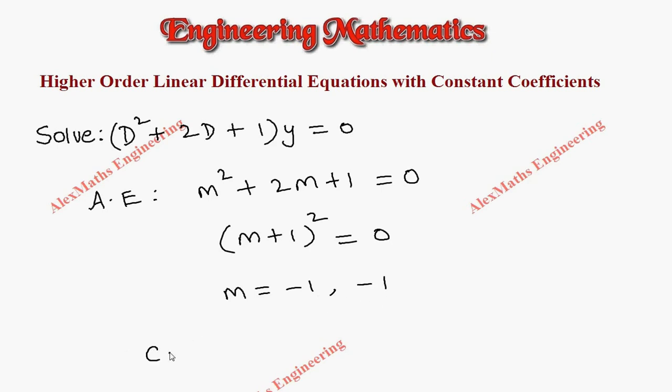Since these two values are equal, as per the procedure, the complementary function is c1 plus c2x into e power mx, but m is minus 1, so minus x.